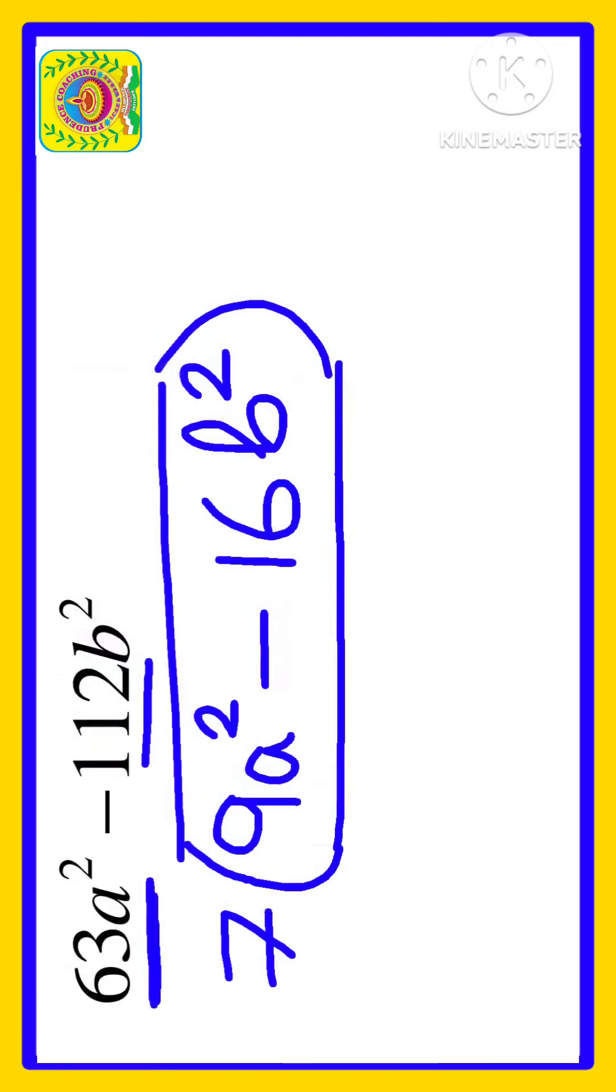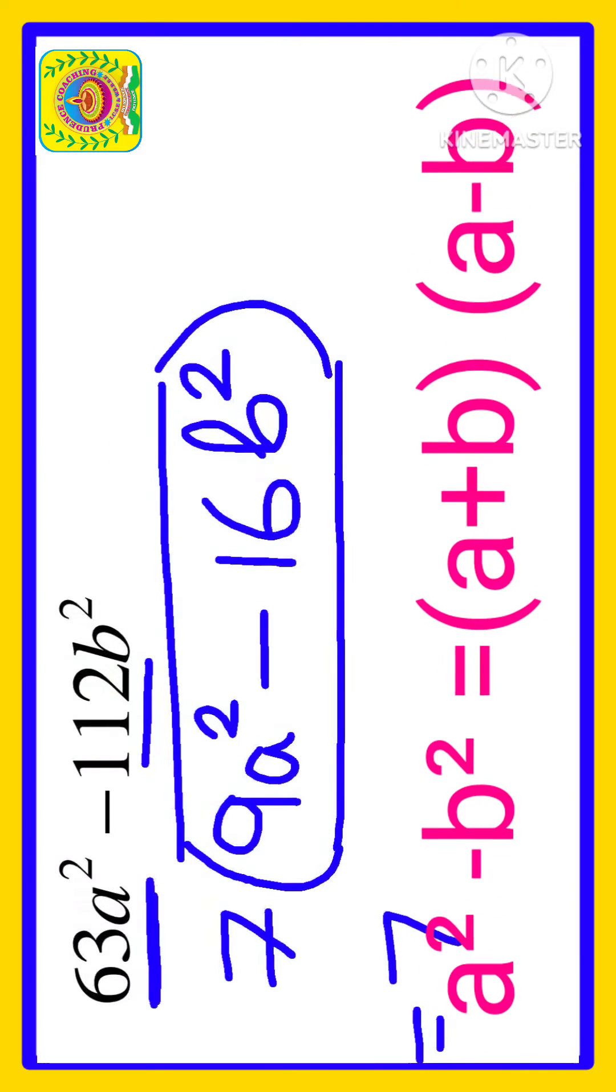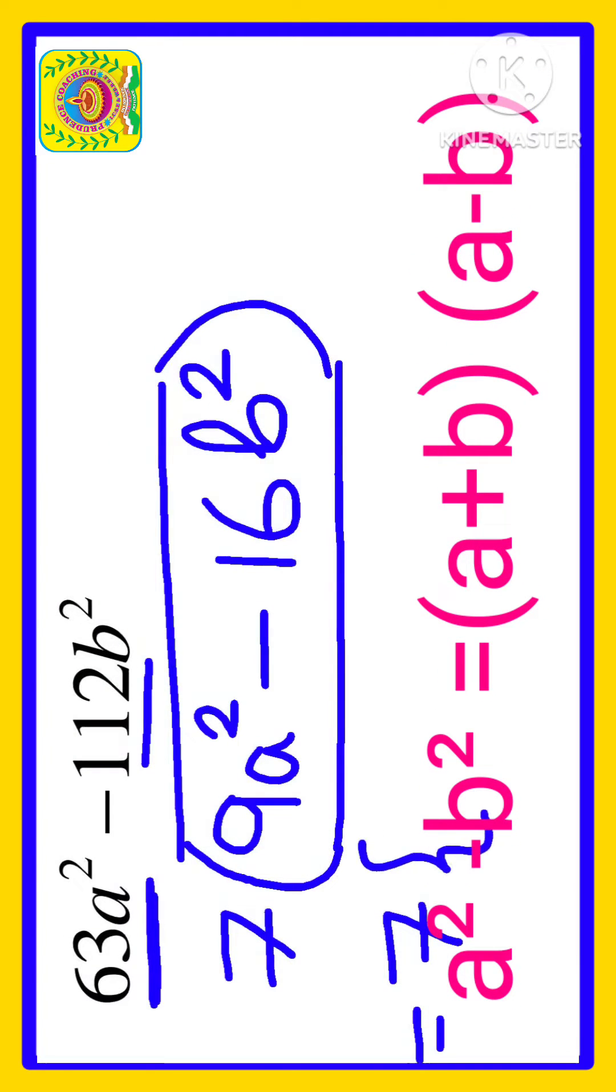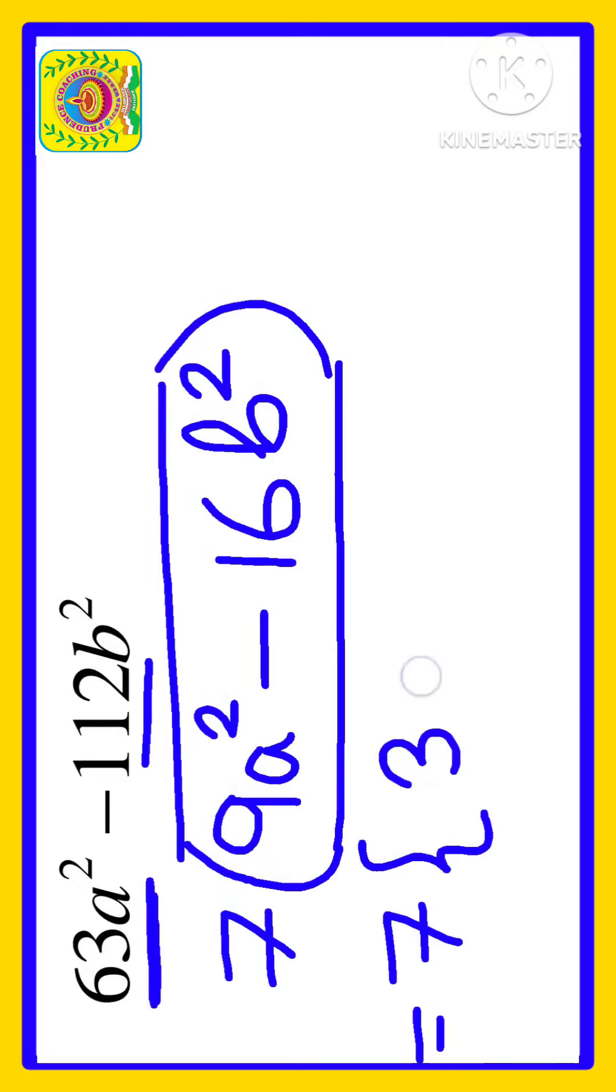Now if you see this particular expression, you will find that 9 is a perfect square and 16 is also a perfect square. Now we can apply the identity a² - b². Let us apply: 9 can be written as 3², and we have a, so we can write it as (3a)².